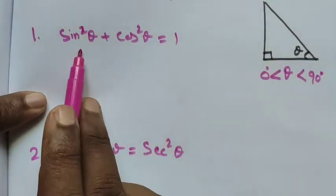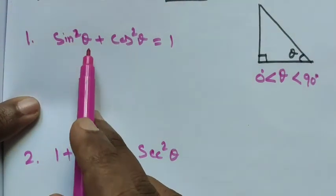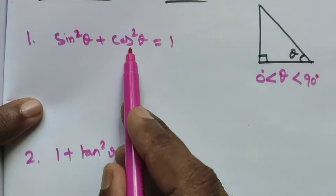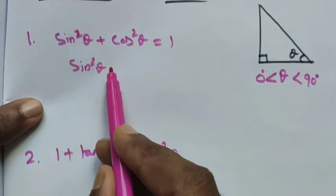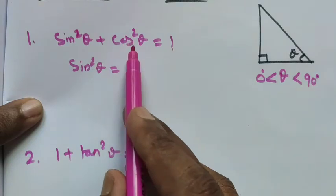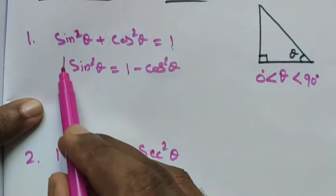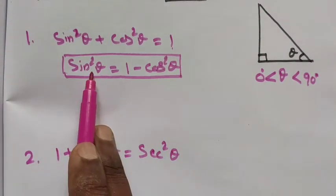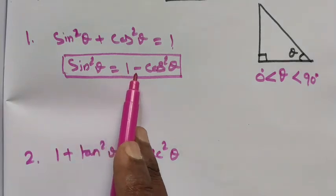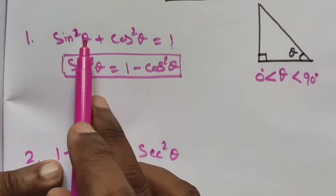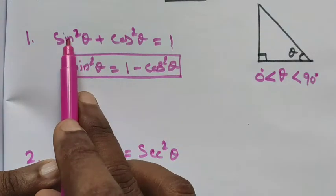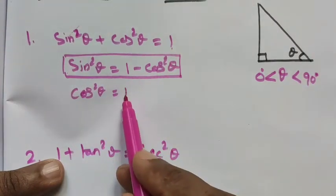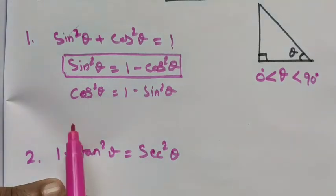Now first we look at the first identity. From this we can rewrite it in different formats. If I take cos square theta to the other side, we get sin square theta is equal to 1 minus cos square theta. And at the same time, if I take sin square to the other side, cos square theta is equal to 1 minus sin square theta.